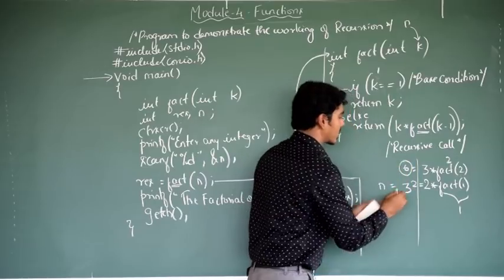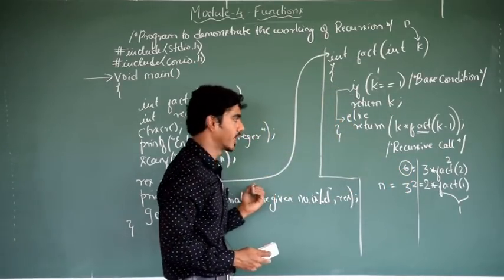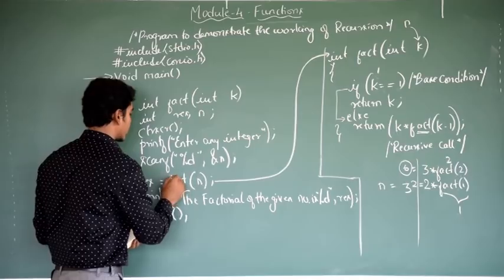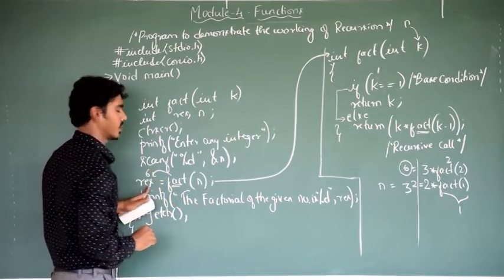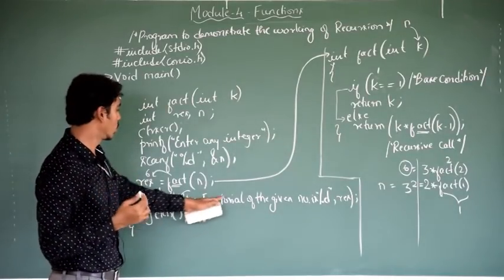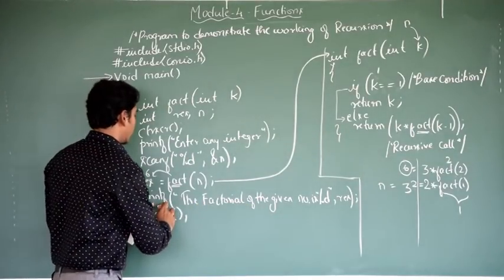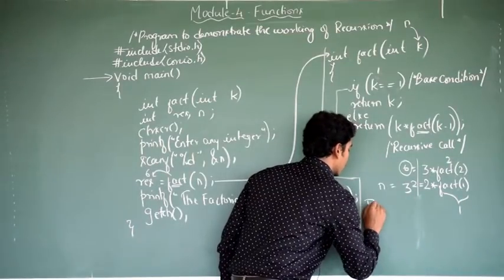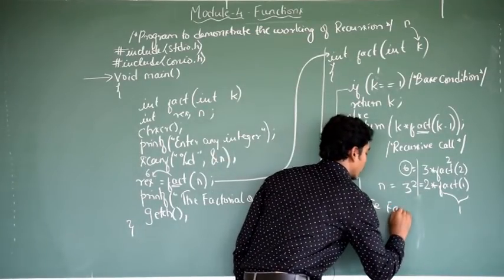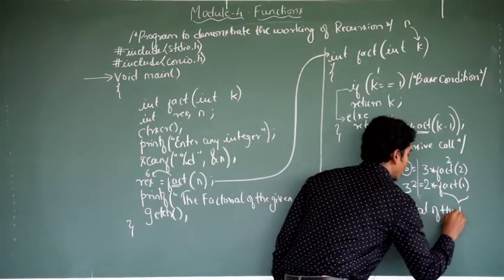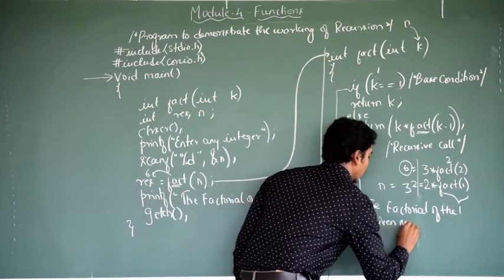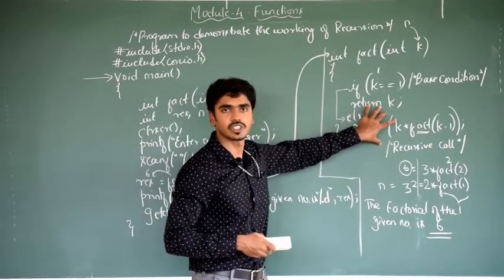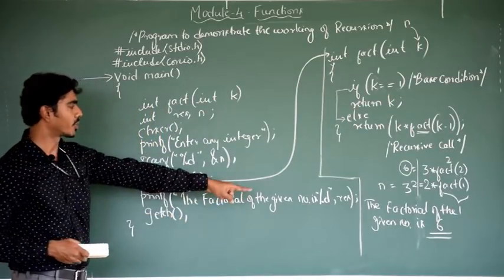Ultimately I got a value of 6, and this value 6 has been returned back to the main program. When the control comes back to the main program, the value 6 is stored in the variable result. Next, we print the value of the factorial: "The factorial of the given number is %d", result — so the output is: The factorial of the given number is 6. Whatever value was computed within the function definition is returned to main, and we print the result.